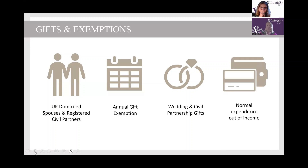The final exemption is gifts out of normal expenditure. This can include life assurance premiums. The key thing is that it doesn't affect your standard of living, which isn't always easy to prove. A lot of grandparents use that particular rule to help pay for school fees — that's quite common. It's very important to get the right advice on it, but the key thing is that you don't leave yourself short, so long as you've still got enough income to maintain your normal standard of living.